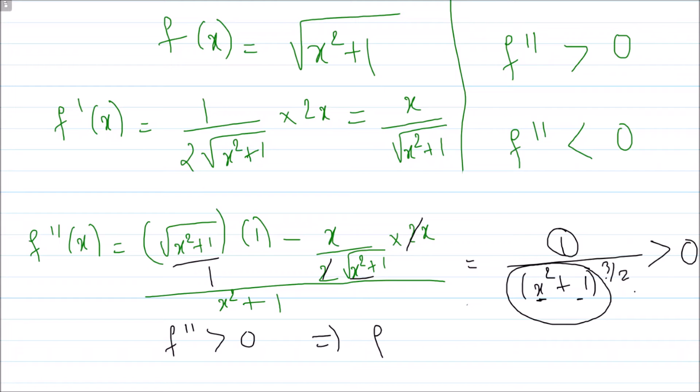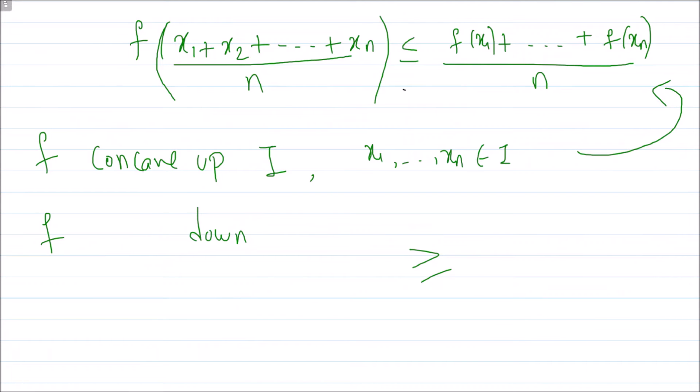So f double prime is strictly greater than 0. This implies that f is a concave up function, therefore we will apply Jensen's inequality. If I try to apply this inequality, what x₁ to xₙ should I choose? You see I have 1 squared plus 2 squared plus 3 squared and so on, so you choose x₁, x₂ to xₙ as 1, 2, 3 up to n.